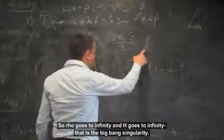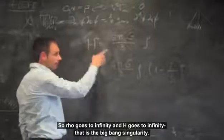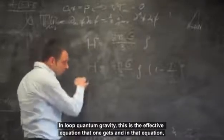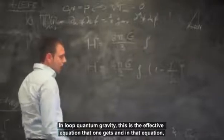So rho goes to infinity and h goes to infinity. That is the Big Bang singularity. In loop quantum gravity, this is the effective equation that one gets. And in that equation,